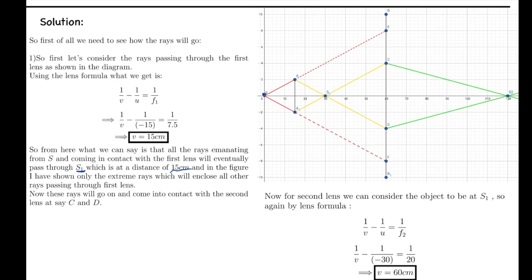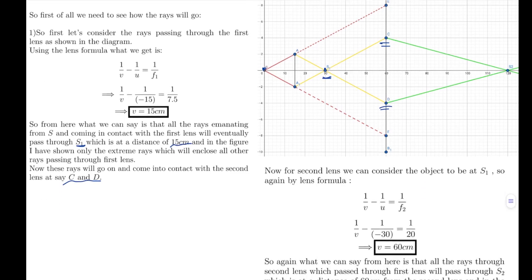In the diagram I have shown the extreme rays which enclose all the other rays passing through the first lens. All the rays pass through point S1, and then continue on to come into contact with the second lens at points C and D. For the second lens, we consider the object to be at S1, since the rays appear to be coming from S1 for refraction at lens 2.